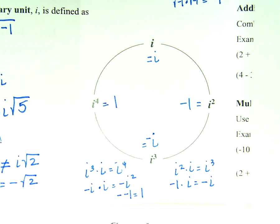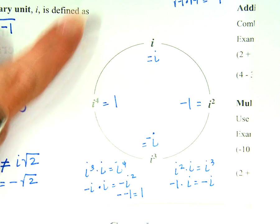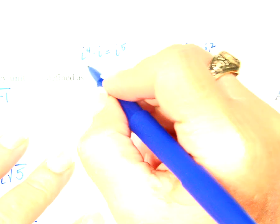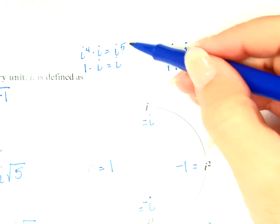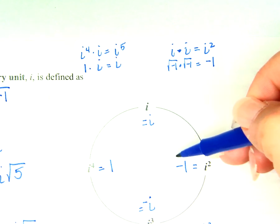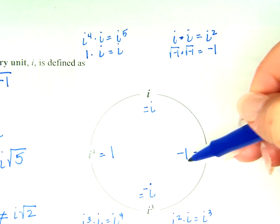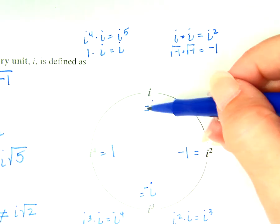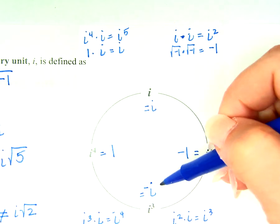Which brings us to i to the fifth. Isn't i to the fourth times i equal to i to the fifth? i to the fourth was 1. What's 1 times i? So i to the fifth is equal to i. Guess what i to the sixth is equal to? Negative 1. And i to the seventh? And i to the eighth? And the ninth? And i to the tenth? How far could we go?